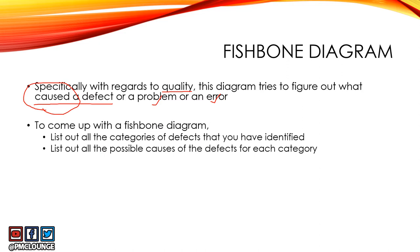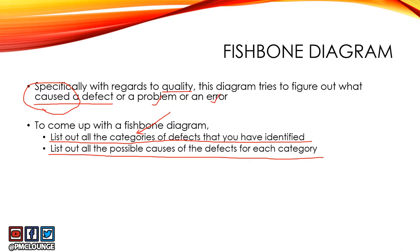To come up with a fishbone diagram, step one is to list out all the categories of defects you have identified. For example, if you have 20 defects, list them out in categories — say five categories under which those 20 defects can fall. Step two is to list out all the possible causes of the defects for each category.